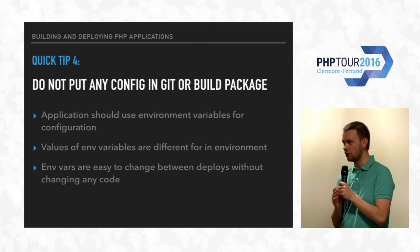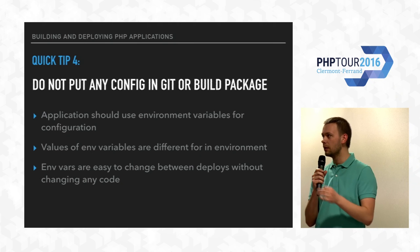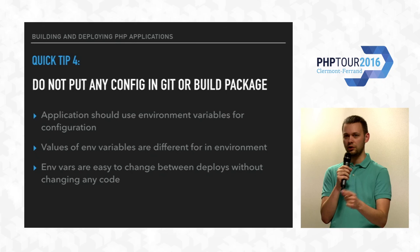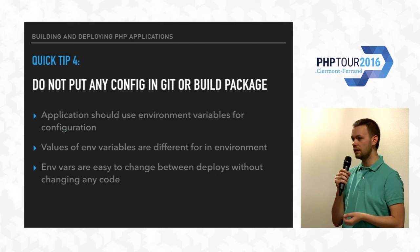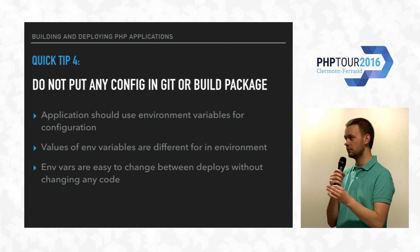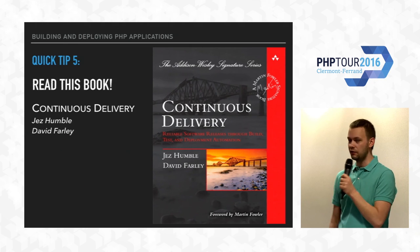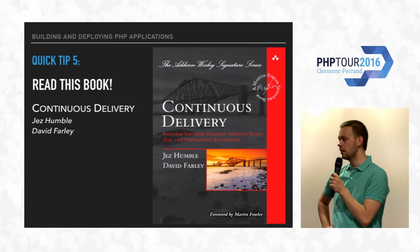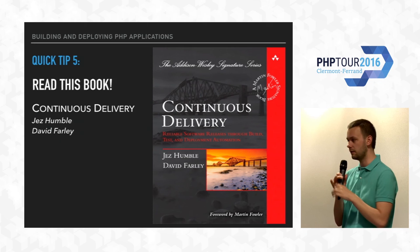Two quick tips to finish. First, don't put any config in your git repo or build package. As you deploy code to many environments like test, QA, and production, the values change, and you should not put that into the build — the build should be the same for all environments. Instead, in your application code, reference environment variables and then change the environment variables on each environment. This is a must-do thing. Second, if you're really interested in this stuff, you should read the book by Jez Humble and David Farley called 'Continuous Delivery.' It's a bit old, but all the principles still apply and it's a really great book if you're into DevOps and delivery.